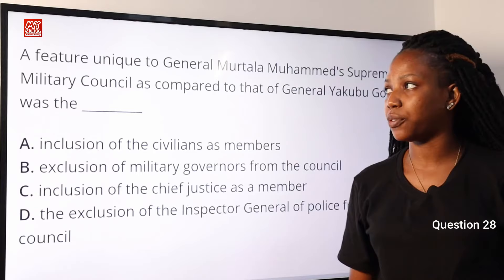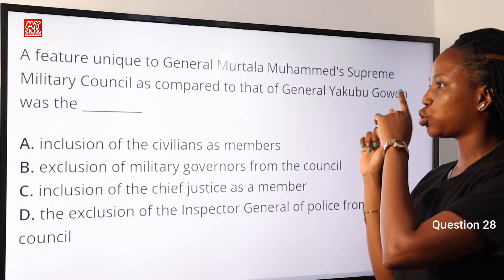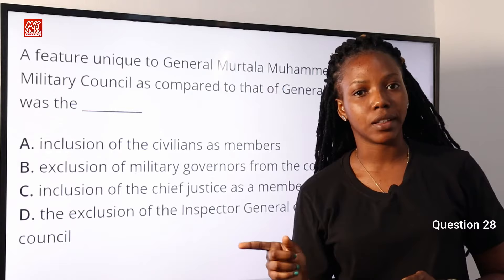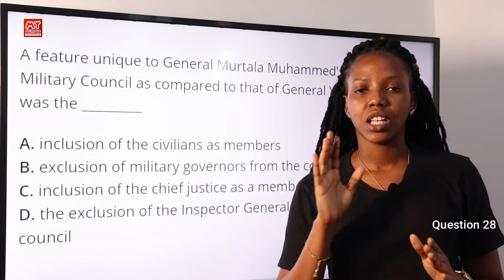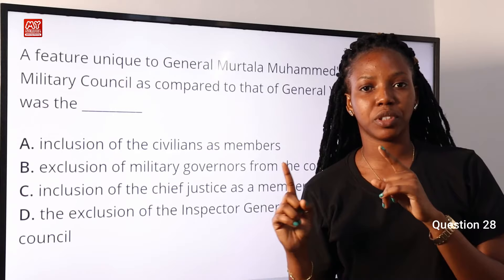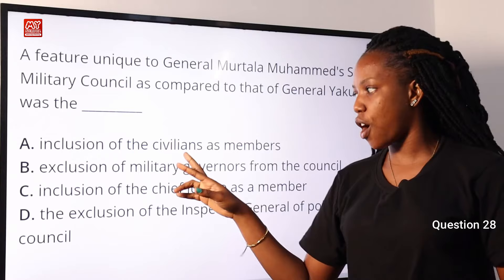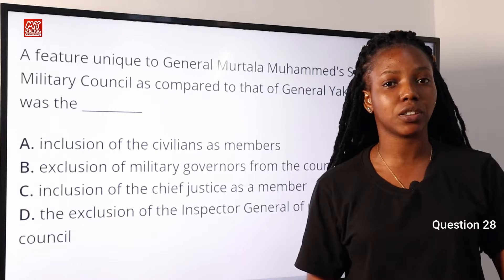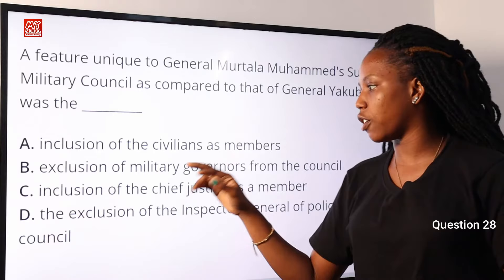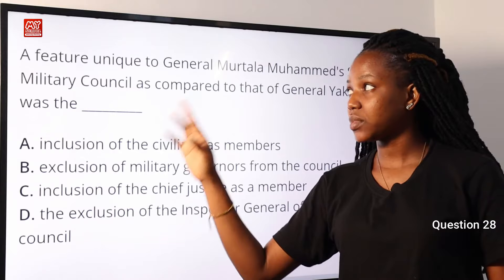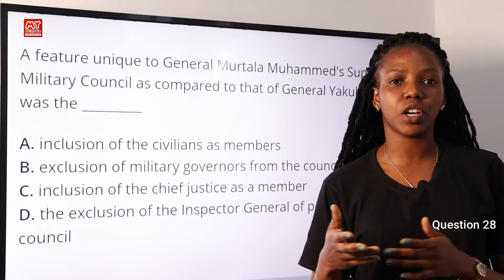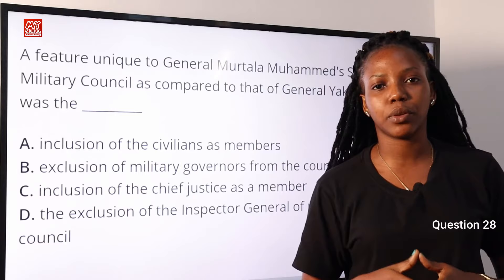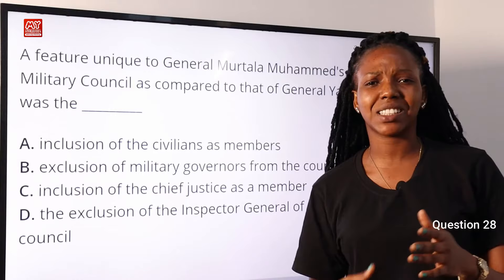Let's take a look at the question carefully — a feature unique to General Murtala's Supreme Military Council. In General Murtala Mohammed's regime, the Federal Military Council consisted of 25 ministerial seats, and out of those 25 seats, 12 were given to civilians. Option A about inclusion of civilians relates to the Federal Executive Council, not the Supreme Military Council. Option B, exclusion of military governors from the council, happened in General Murtala Mohammed's regime. New military governors were excluded from the Supreme Military Council and were instead told to administer and supervise federal policies. Option B is the correct answer.